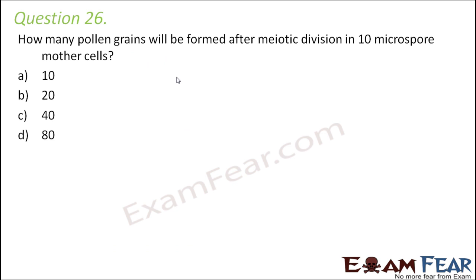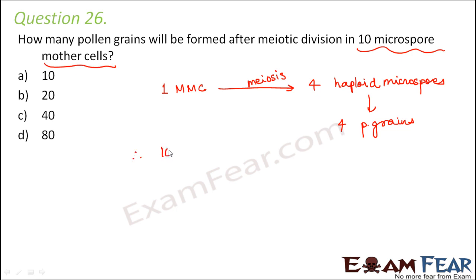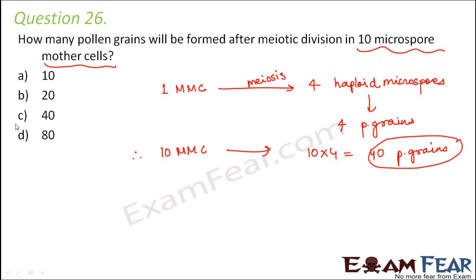Question number 26: How many pollen grains will be formed after meiotic division in 10 microspore mother cells? The microspore mother cell is a diploid cell, and one microspore mother cell undergoes meiosis to form four haploid microspores, which form four haploid pollen grains. So one microspore mother cell forms four pollen grains after meiotic division. Therefore 10 microspore mother cells will form 10 × 4 = 40 pollen grains. Option C is the right answer.